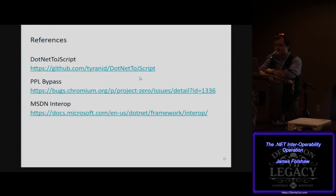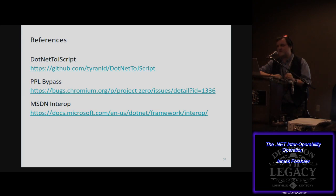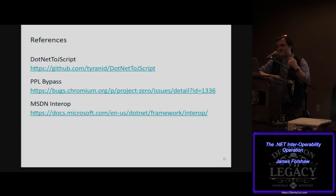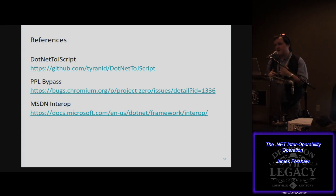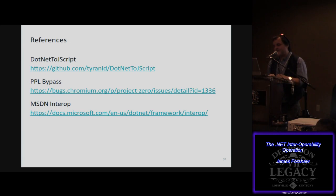I'll try to release my tools to pull out COM objects. On a default system there are about 230 potential COM objects you could access through the registration-free COM trick. With Visual Studio or other software installed there are even more. If you install OpenOffice, their COM interop libraries apparently forgot to mark com accessible as false, so everything is COM accessible. For more information: the source code for .NET to JScript is available, my PPL bypass report is on the issue tracker, and the MSDN has an entire section on .NET Interop.